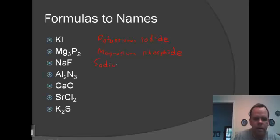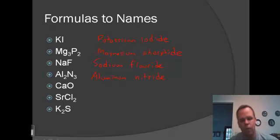NaF: sodium fluoride. Al3N: aluminum nitride. The IDE ending for the element. If you see nitrate or nitrite, you know it was the polyatomic with the IT or ATE ending.